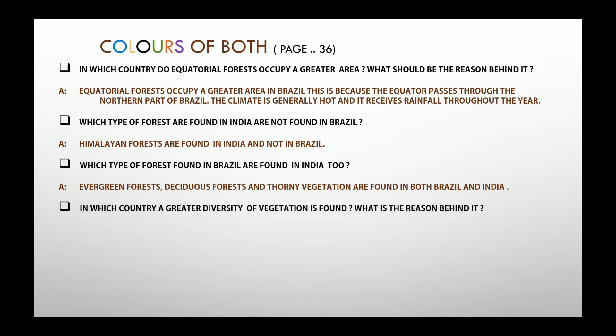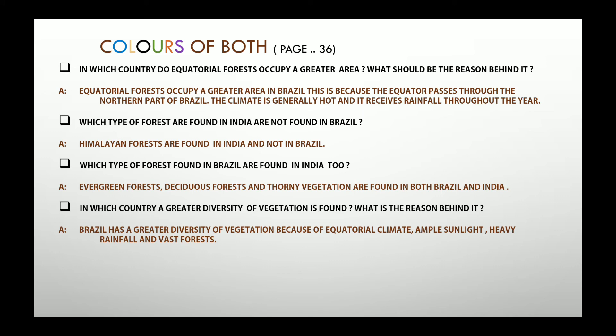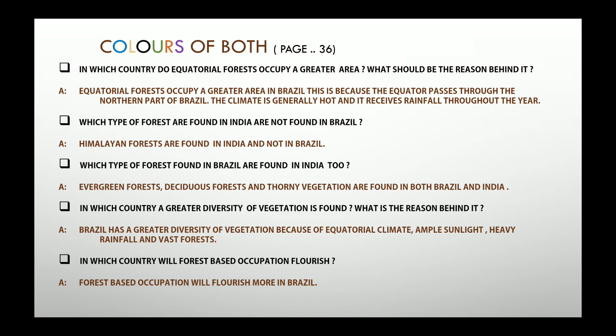In which country is a greater diversity of vegetation found and what is the reason? Greater vegetation diversity is found in Brazil because it has an equatorial climate, ample sunlight, heavy rainfall, and vast forests. In which country will forest-based occupations flourish? Since the equatorial forest and vast forests are in Brazil, forest-based occupations can flourish in Brazil.